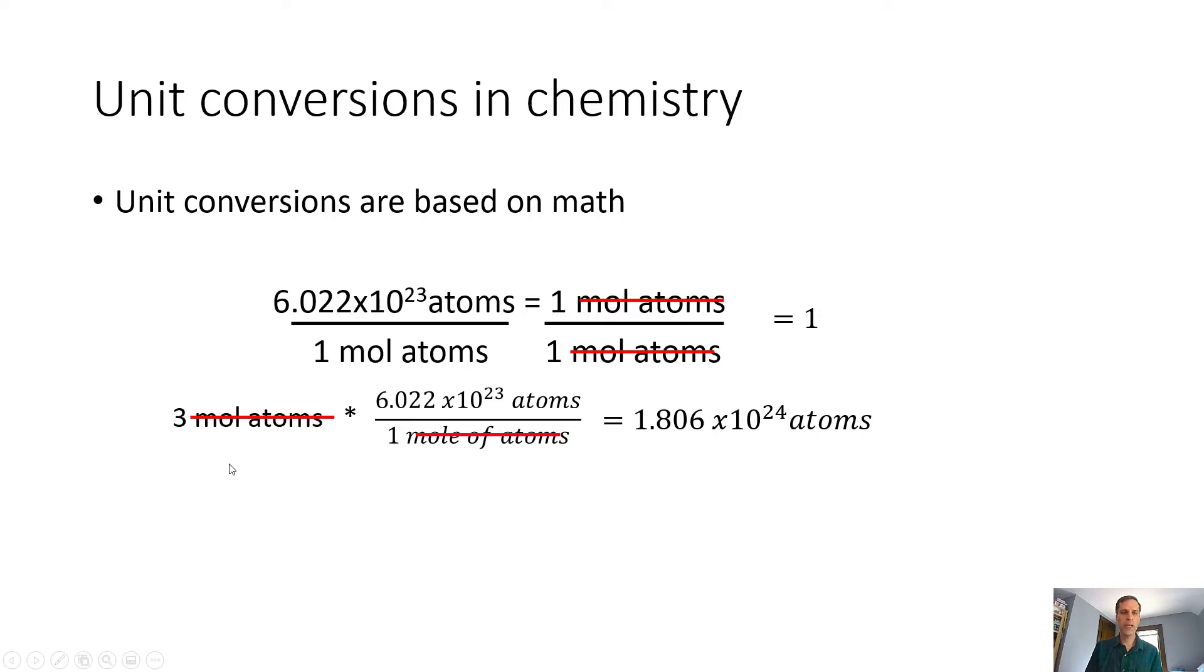I want to point out that we had that initial relationship of 6.022 times 10 to the 23rd atoms was one mole, and we used it this way, but we could have divided by 6.022 times 10 to the 23rd atoms and gotten this relationship instead. When we have these equalities we can interconvert between different kinds of units. That's what we mean when we talk about a unit conversion.